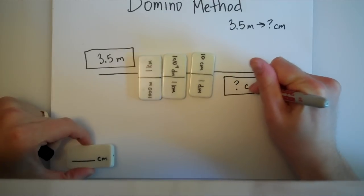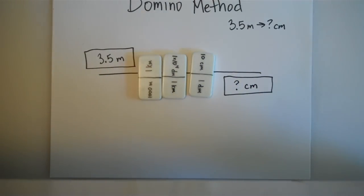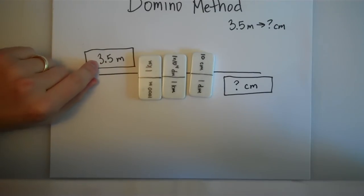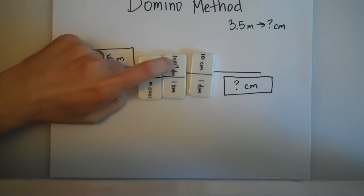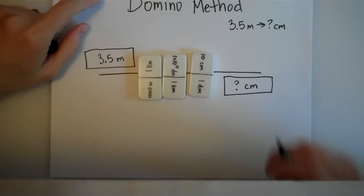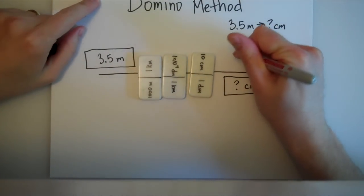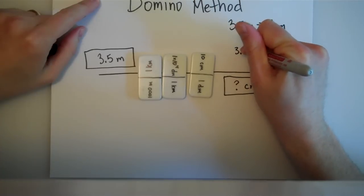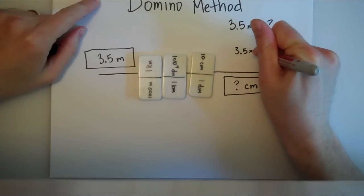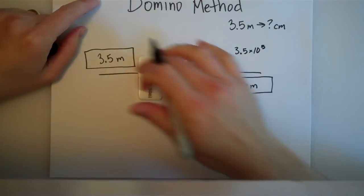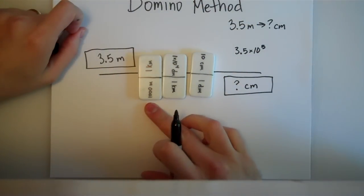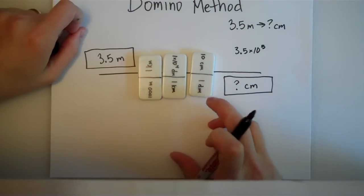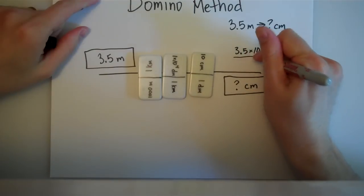I could multiply 3.5 times 1 times 1 times 10 to the 4th times 10. That would give me 3.5 times 10 to the 5th on the top. On the bottom, I have 1,000 times 1 times 1, which obviously is just 1,000.